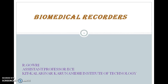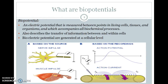Before going to ECG, we should know about what biopotentials are. Biopotential means the electric potential measured between living cells, tissues, and organisms. It is also used to transfer information between and within cells. A cell is the basic living unit of the human body, and each organ consists of different cells, each responsible for one particular function.